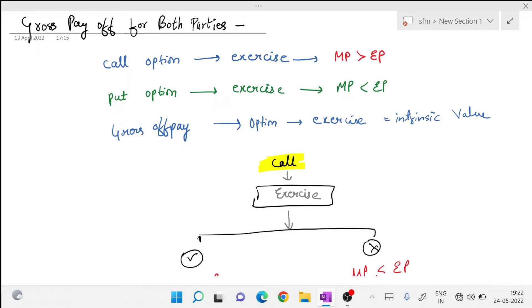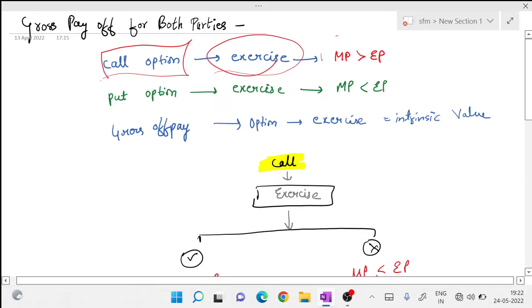Okay guys, the call option can exercise only in case when market price is more than exercise price. The logic behind this is call option gives you right to buy. So guys tell me when will you buy anything if your market price is more or when exercise price is more? Common sense.